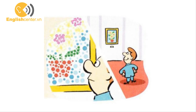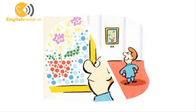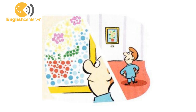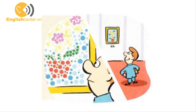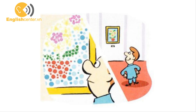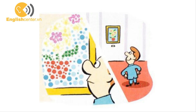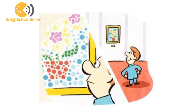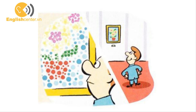Discover! Georges Seurat painted different colored dots close together. You only see them if you go near to the painting. If you stand two or three meters away, the different colors mix and make new colors.